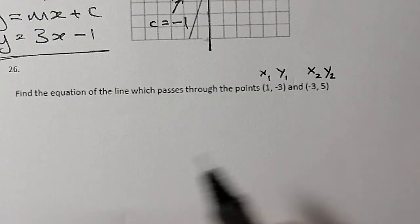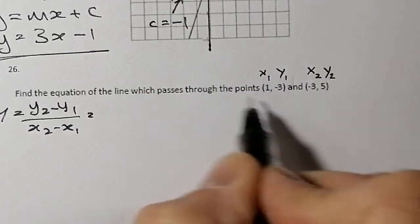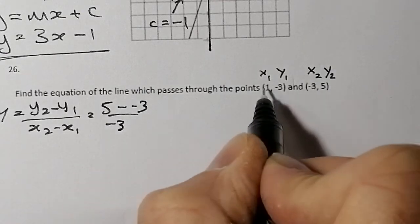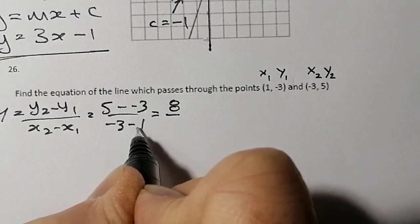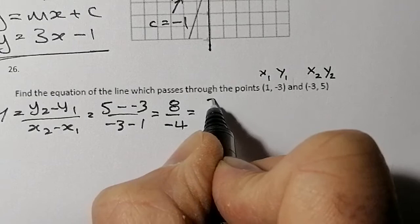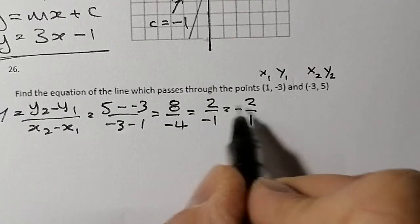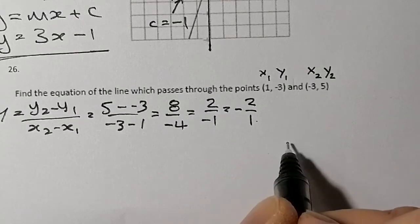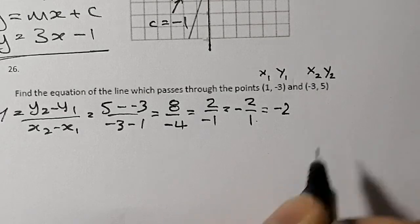I'll work out the gradient right away. Gradient = (y2 - y1) / (x2 - x1) = (5 - (-3)) / (-3 - 1) = 8 / -4. Simplifying by dividing top and bottom by 4 gives 2 / -1, which is just -2. A gradient of -2 means every time I move along 1 place, I go down 2. So the gradient is -2.